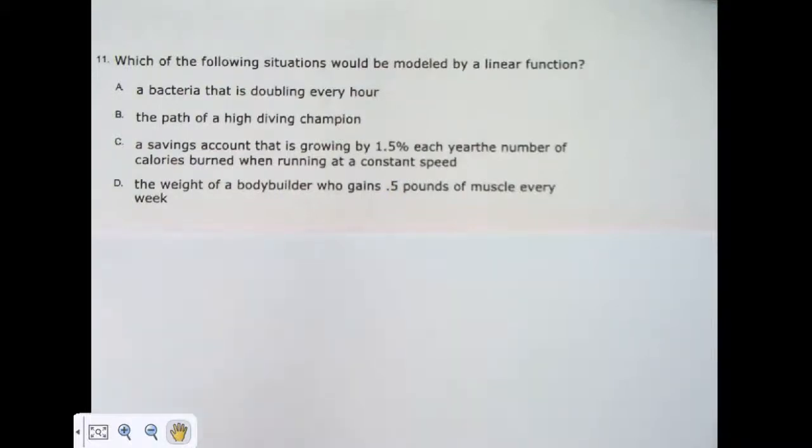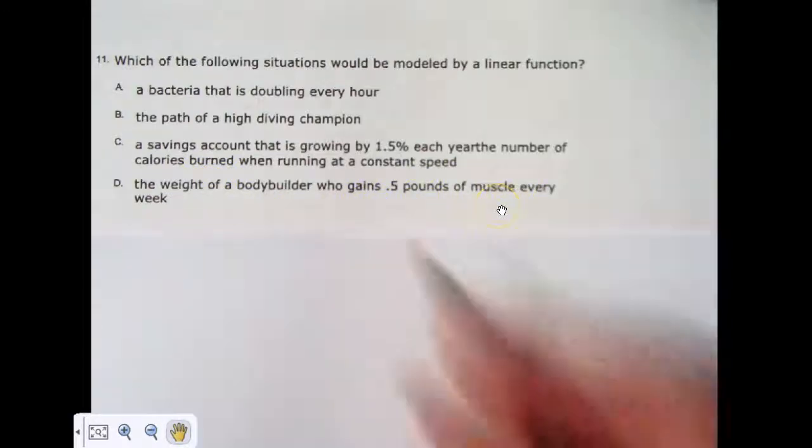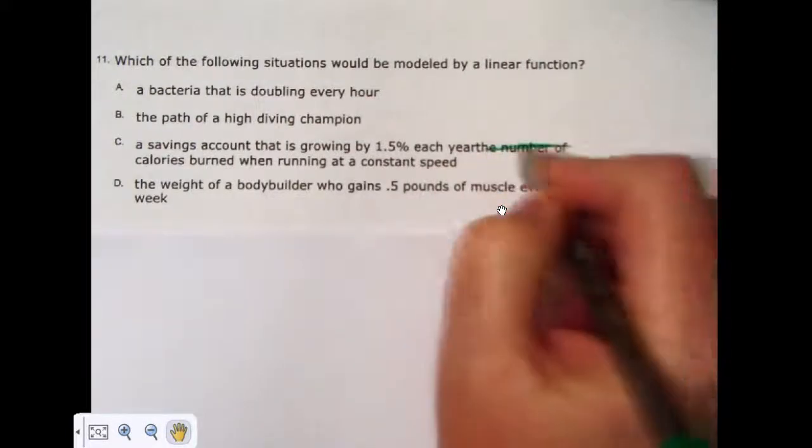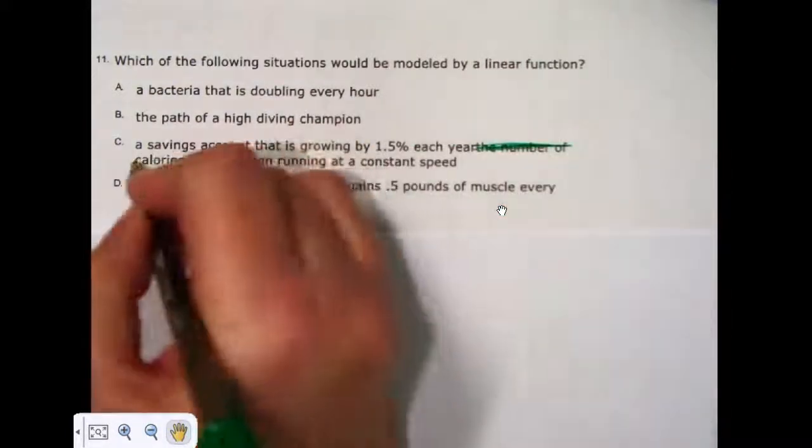Letter A says a bacteria that is doubling every hour. Letter B says the path of a high diving champion. Letter C says a savings account that is growing by 1.5% each year. Let's take that part out. That was supposed to be erased, the number of calories burned when running at a constant speed. We'll take that out. You might see that again tomorrow, but who knows. The weight of a bodybuilder who gains 0.5 pounds of muscle every week. Now again, I'm going to cross that part out because that was not supposed to be part of that answer choice.